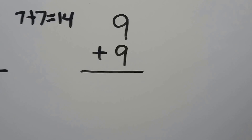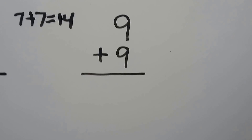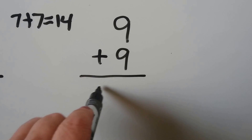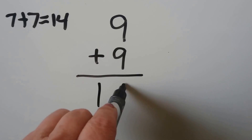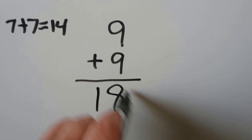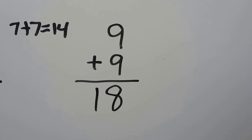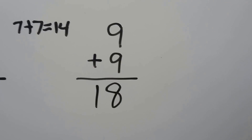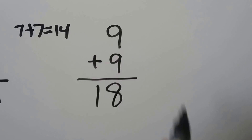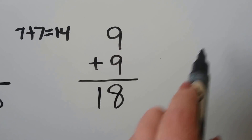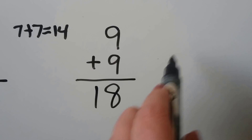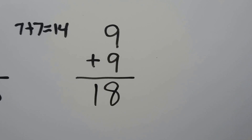9 plus 9 is equal to 18. We could even use counters — we could make 9 counters and 9 more and then count them all.